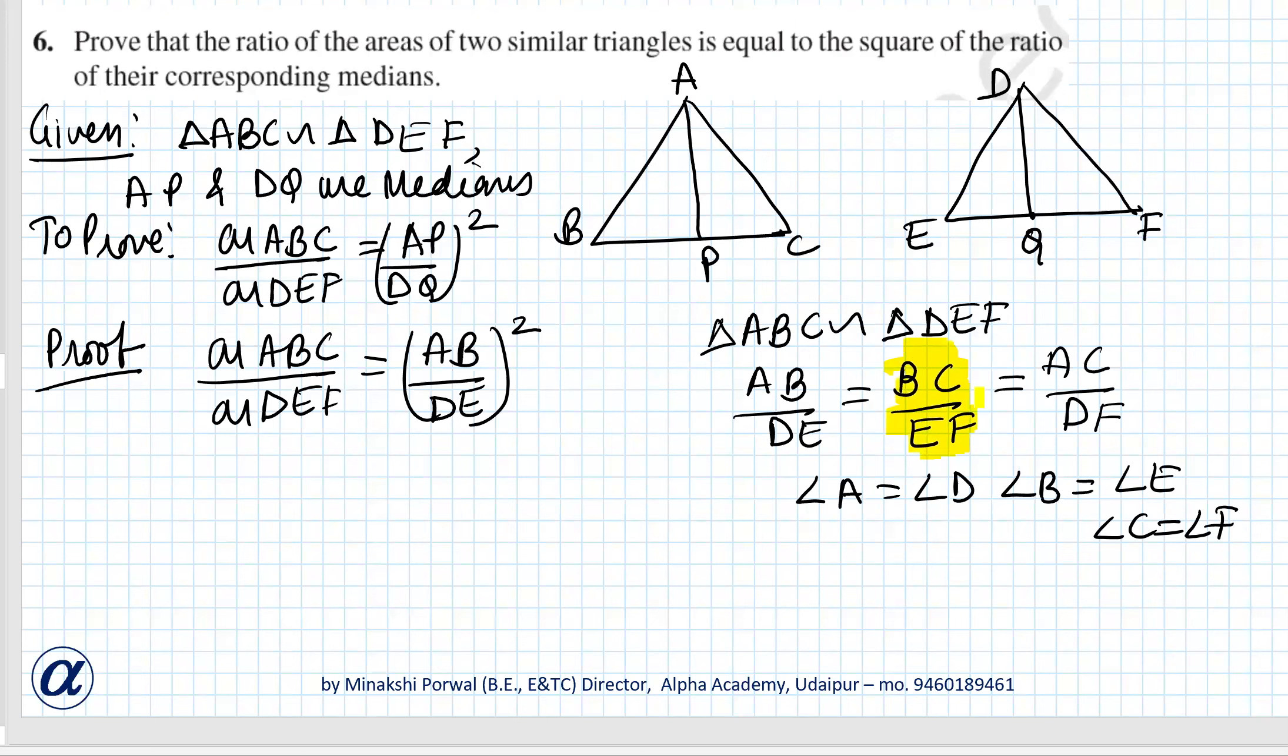BC can be written as two times BP, and EF can be written as two times EQ. This gives us AB upon DE equals BP upon EQ, and angle B equals angle E, so we...